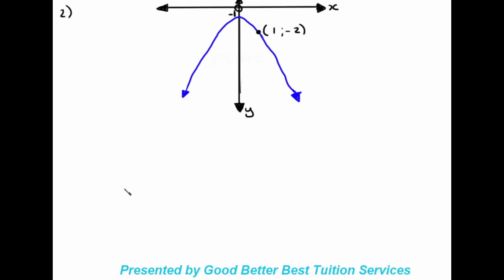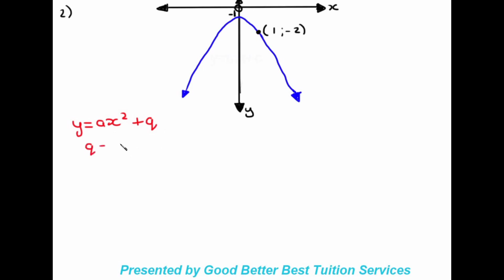Moving on to the next example, which looks a bit different. We've been given our turning point. Following how we've been solving examples: y is equal to ax squared plus q, and q is given to us as negative one. So we have y equals ax squared minus one.